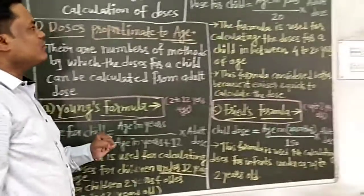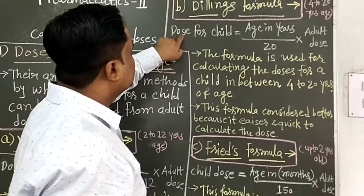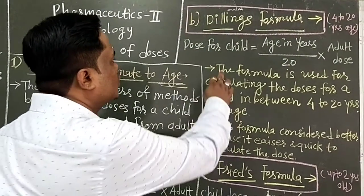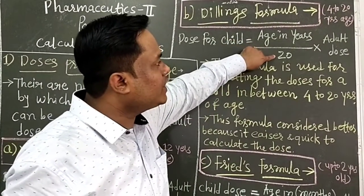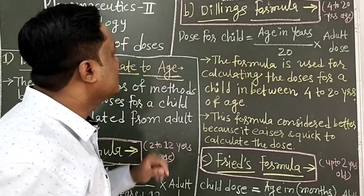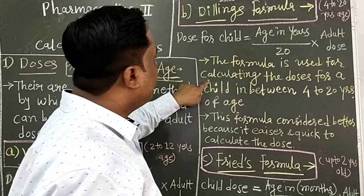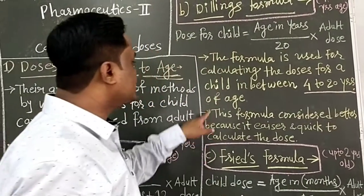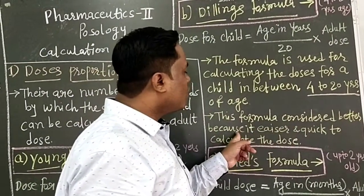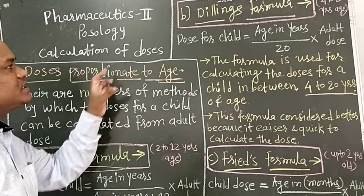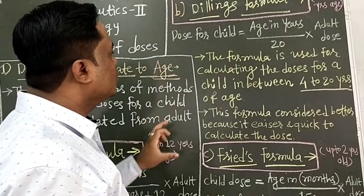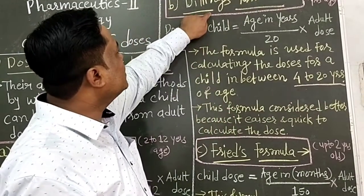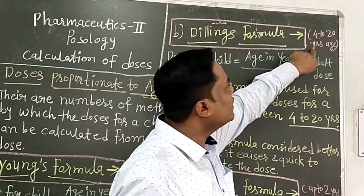The second formula is Dilling's formula, also used to calculate doses according to age group. The formula is: Dose for a child = (Age in years) / 20 × Adult dose. This formula is used for calculating doses for children between 4 to 20 years of age. It is considered better because it is easier and quicker to calculate.